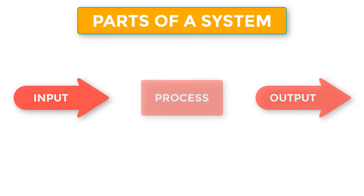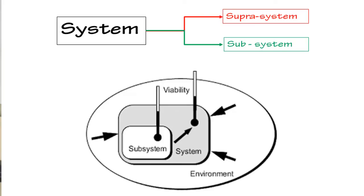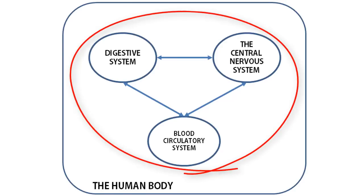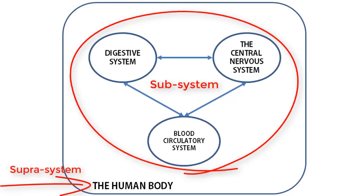We have what we call a suprasystem and also what we call a subsystem, and they all exist in an environment. A subsystem is a subset of a system, while a suprasystem is the larger one that contains them. For example, the human body is a system, but it contains many systems within it — the digestive system, the blood circulatory system, the central nervous system. These are called subsystems, while the whole body is the suprasystem.